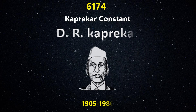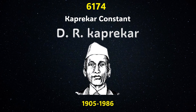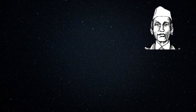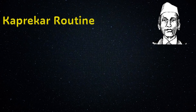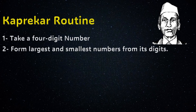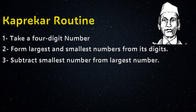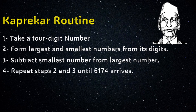This constant is named after the Indian mathematician Dr. Kaprekar. To summarize the Kaprekar routine: Step 1 — take a four-digit number. Step 2 — form the largest and smallest numbers from its digits. Step 3 — subtract the smallest from the largest. Step 4 — repeat steps 2 and 3 until 6174 is reached.